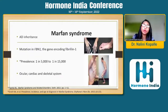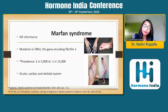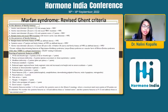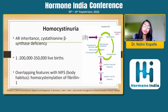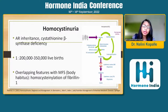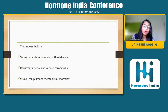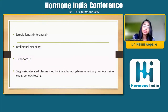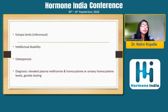Marfan syndrome is autosomal dominant with a mutation in the Fibrillin-1 gene. It has ocular malformations, skeletal abnormality, and definitely a cardiac defect. We use the revised Ghent criteria for diagnosis. Homocystinuria has autosomal recessive inheritance; it is very rare but shares many features with Marfan — similar body habitus and arachnodactyly. These patients are prone to thromboembolic phenomena, so it is important to identify homocystinuria to prevent a catastrophic event. Ectopia lentis with inferonasal migration of the lens is characteristic. Diagnosis is by identifying elevated homocysteine and methionine levels.